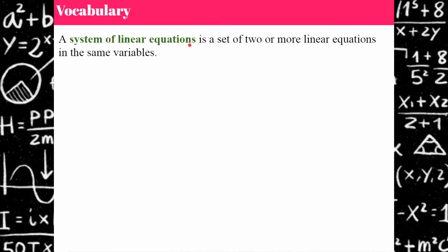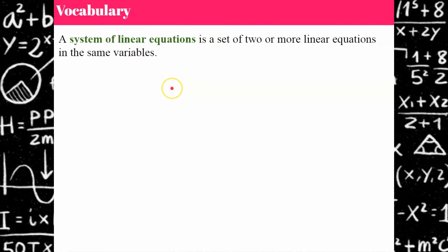A system of linear equations is a set of two or more linear equations in the same variables, meaning x and y. So y equals 3x plus 2, and the second equation would be y equals 2x plus 4, or something similar — but they both have an x and they both have a y.